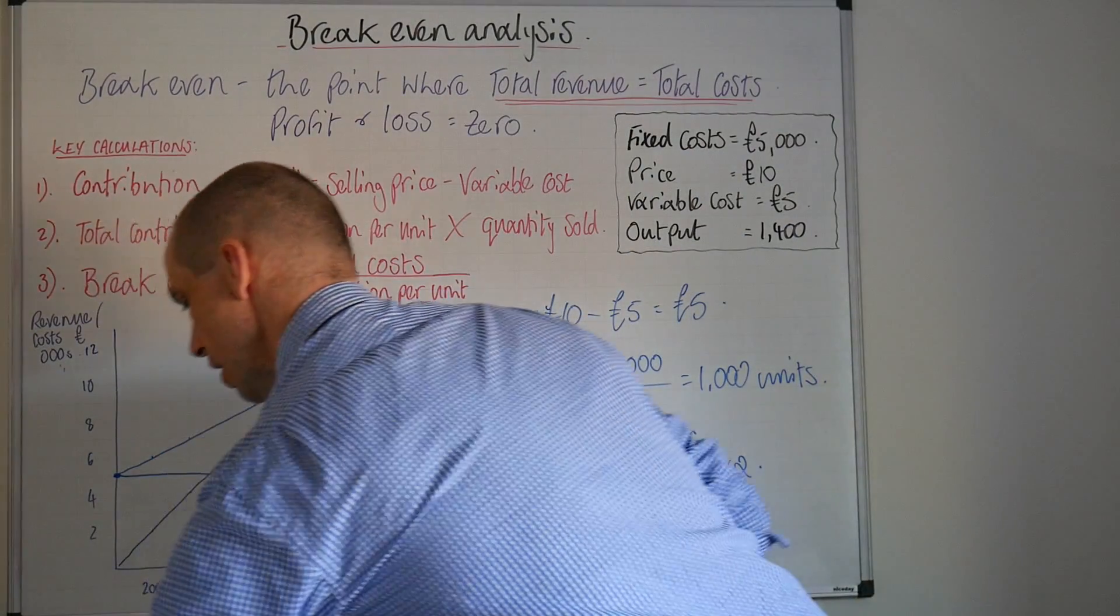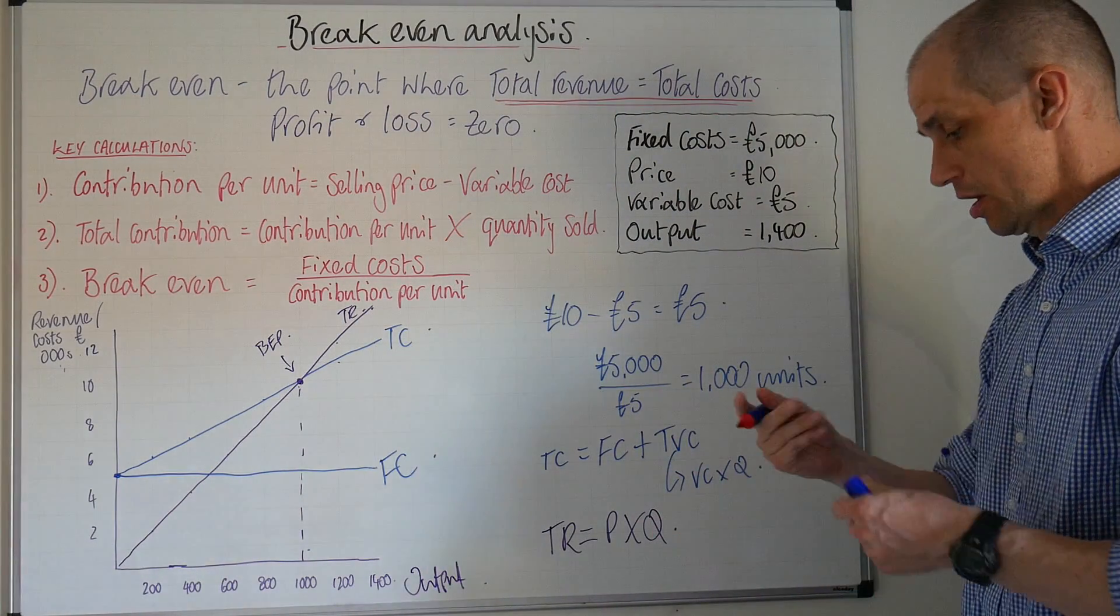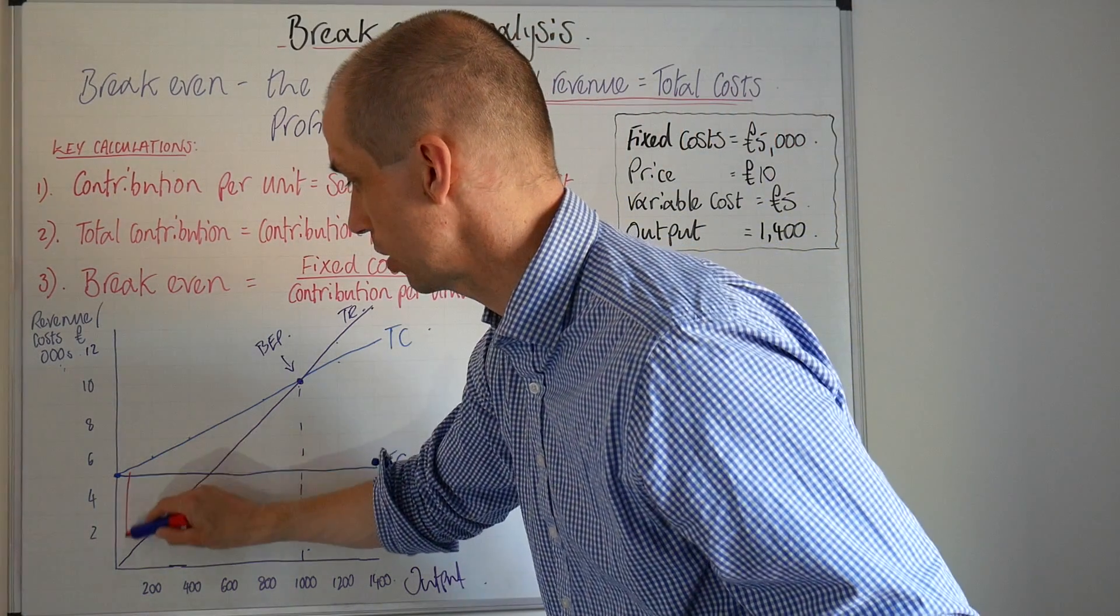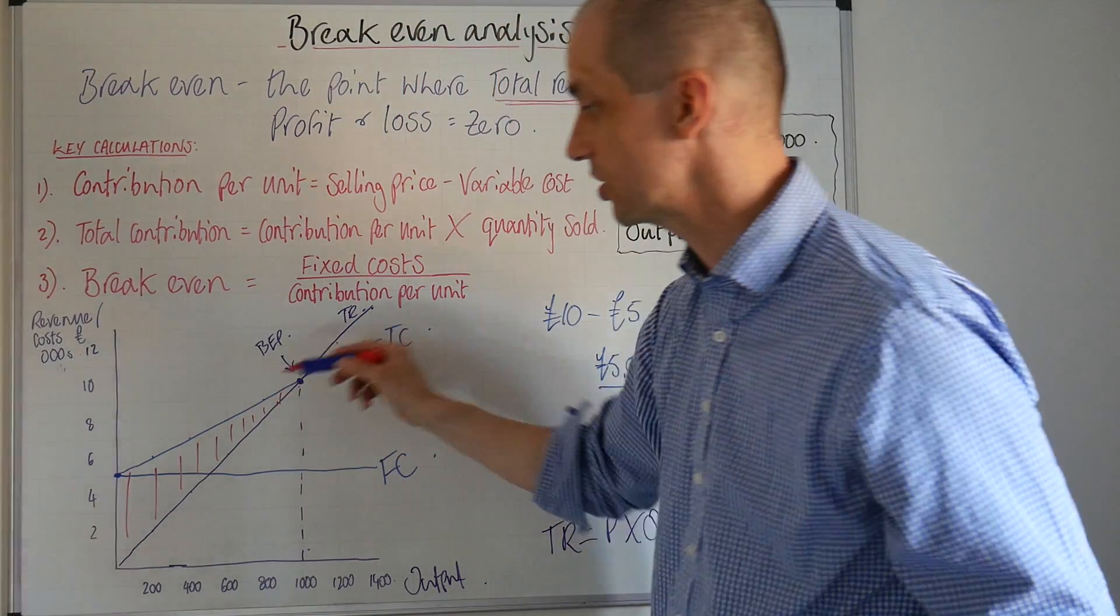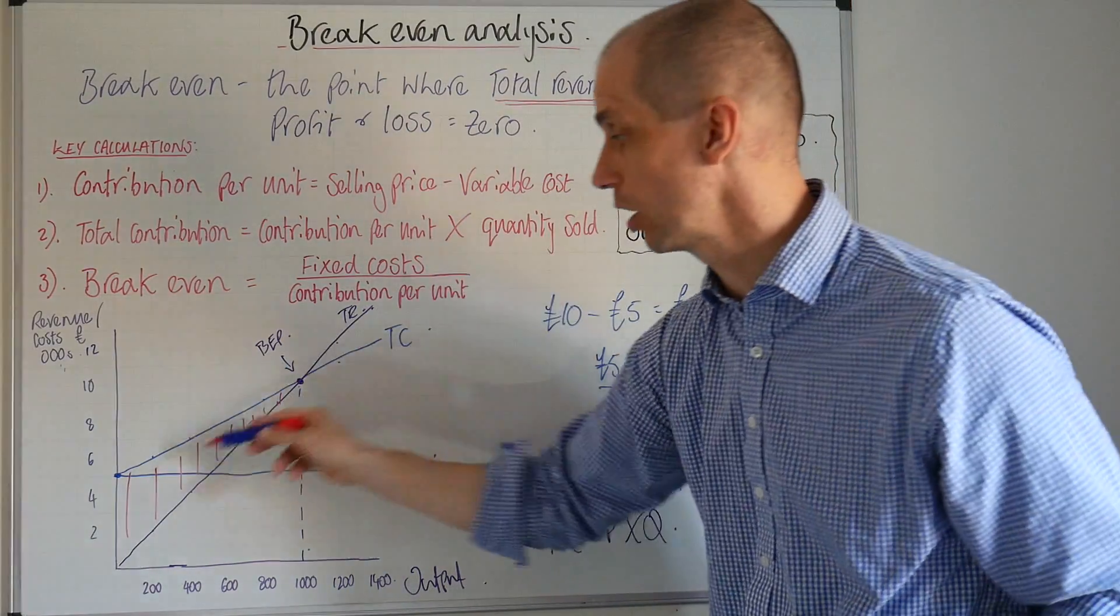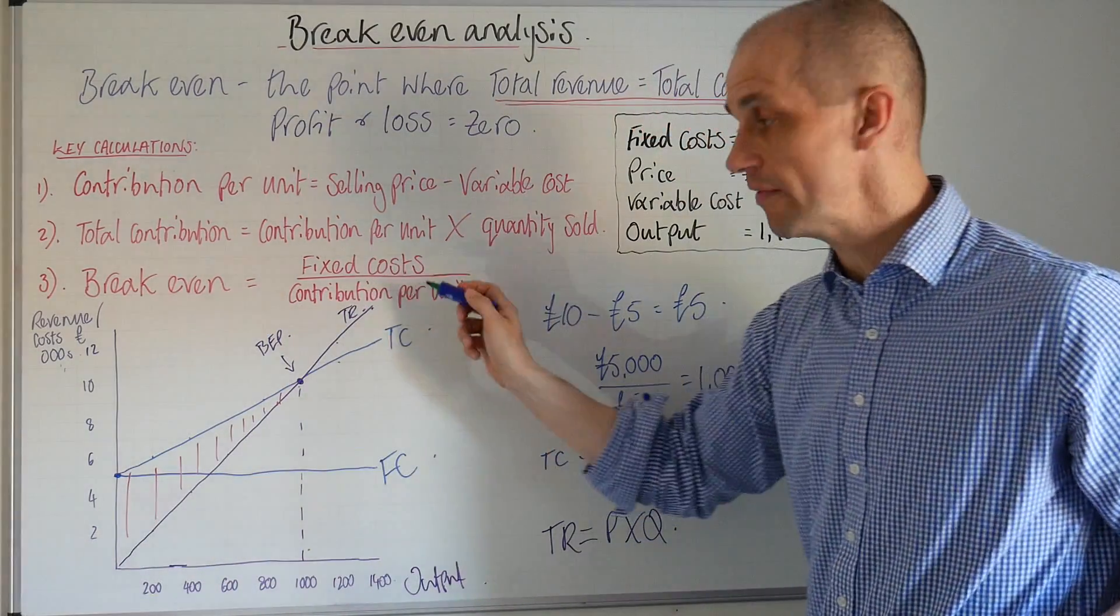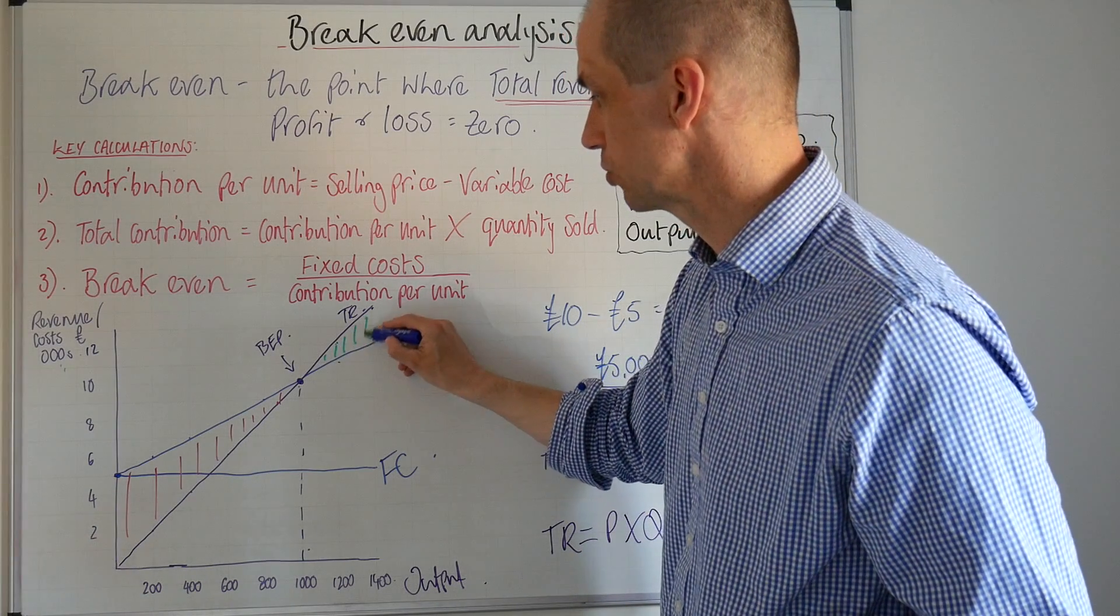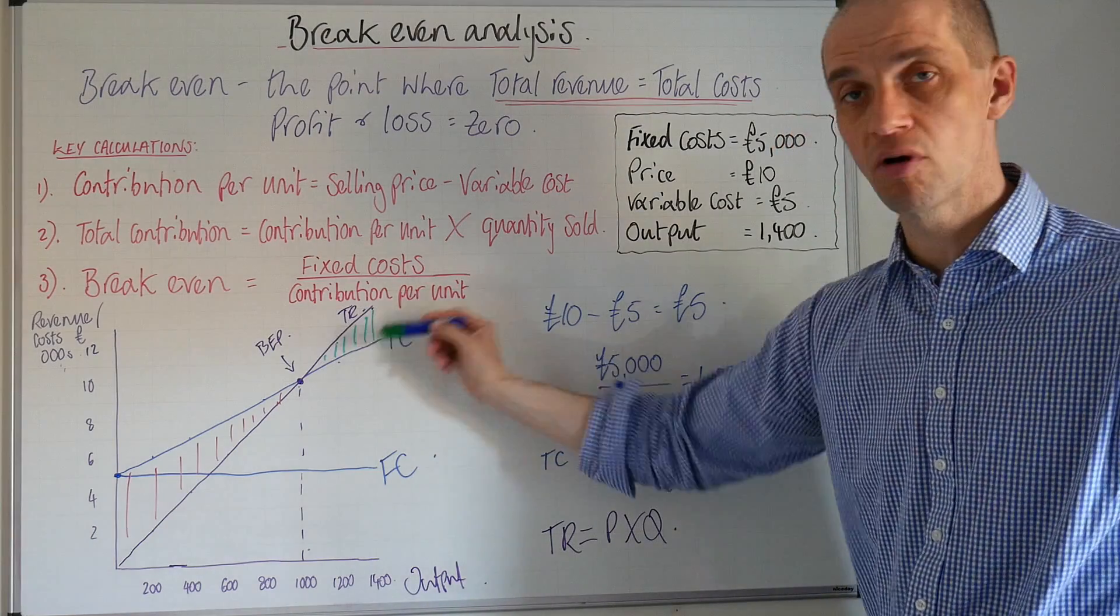So now let's just take two more colors here and just represent these different areas within our break-even graph here. Now this triangle that we have highlighted here, well this area you can see the actual total cost is greater than the total revenue. So at this level the business is making a loss, so I'm highlighting that in red to reflect that. Up here we can see the total revenue is greater than total cost. The total revenue here is greater than the total cost and therefore the business has a profit. So I'm highlighting that in green there.